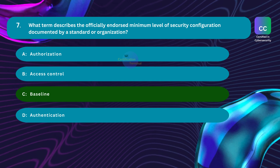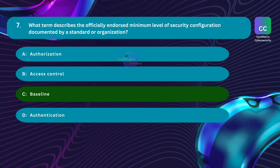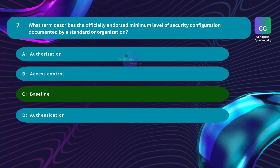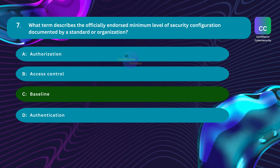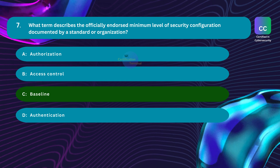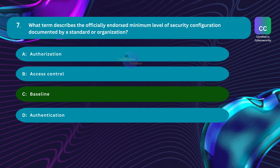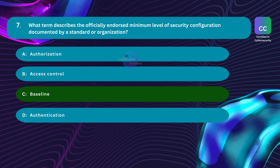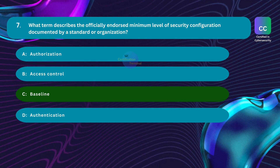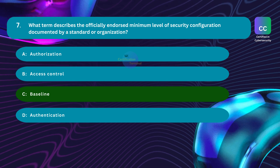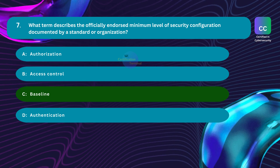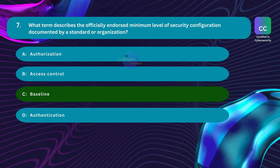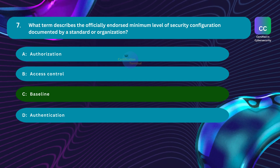A baseline defines the minimum security configurations or settings considered acceptable or standard for a system or environment. Option A, authorization, is incorrect — authorization determines what an authenticated entity is allowed to do or access. Option B, access control, manages and restricts access to resources based on predefined policies. Option D, authentication, is the process of verifying the identity of a user, system, or entity trying to access resources or services.